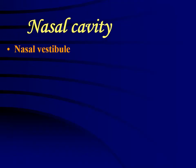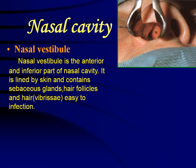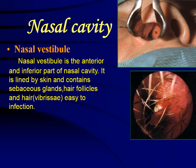Now for the nasal cavity — first we will look at the nasal vestibule. You can see its structure in the diagram here. The nasal vestibule is actually an interior and inferior part of the nasal cavity. Its skin — the outer layer — contains glands, hair follicles, and hairs. You can clearly see its structure here in the diagram.